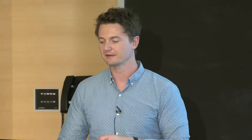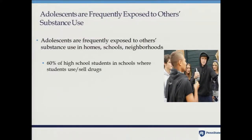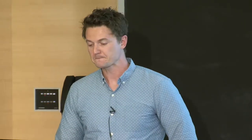We chose DRD4 largely because of work in developmental psychopathology showing children and adolescents with this allele are more sensitive to their social environments, and from experimental work showing similar things. We wanted to see if we could capture a between-person difference in that within-person association and see if DRD4 was a predictor of it. Data from nationally representative surveys show that U.S. adolescents are frequently exposed to substance use in their homes, schools, and neighborhoods — 60% of high school students are in schools where students are using or selling drugs, and about 11% of U.S. youth under 18 live with a parent suffering from alcoholism.